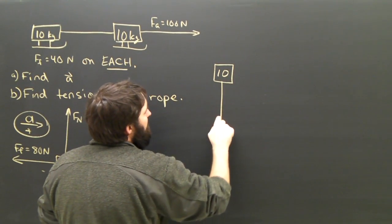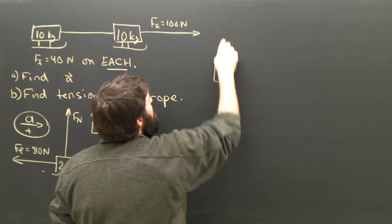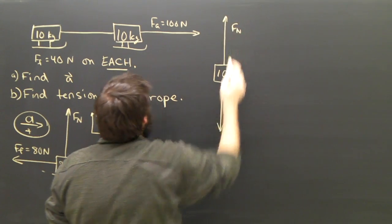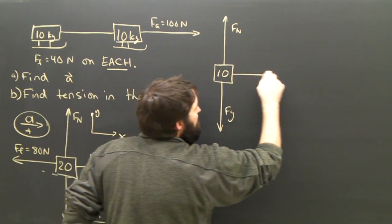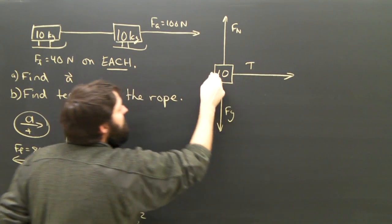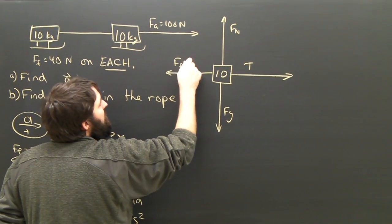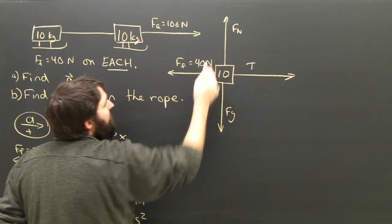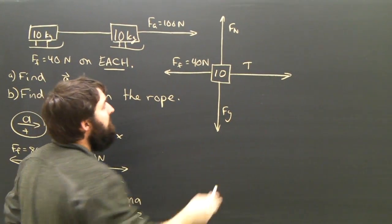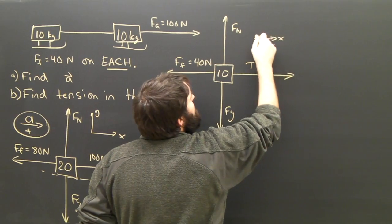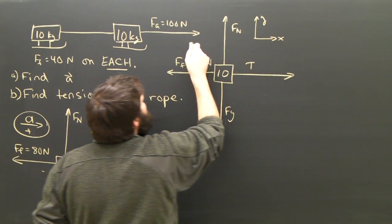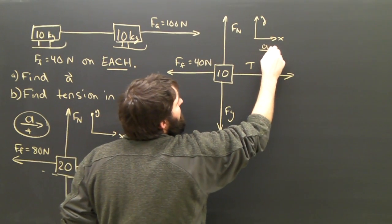10 kilograms. Is there gravity? Yes, of course, Fg. There's a normal force still. Now there's a tension to the right, and there's a force of friction opposing the motion, but it, of course, is only 40 newtons. Again, x is going to be to the right, because this thing is accelerating to the right.